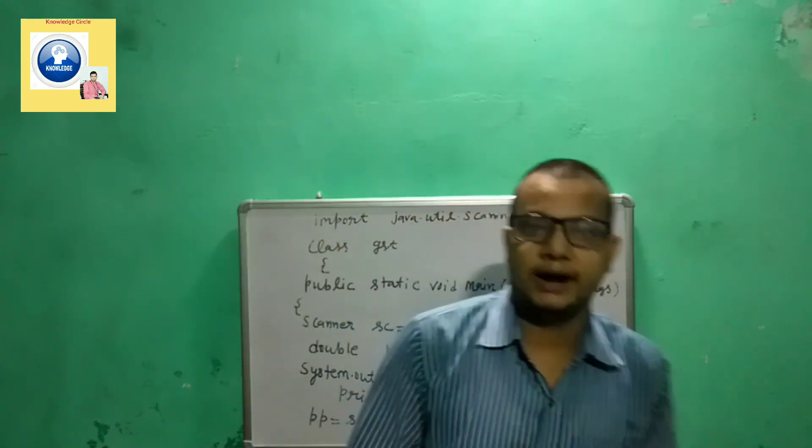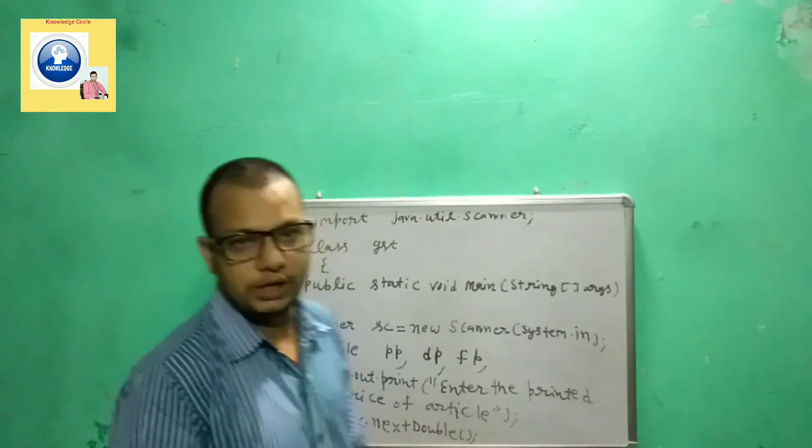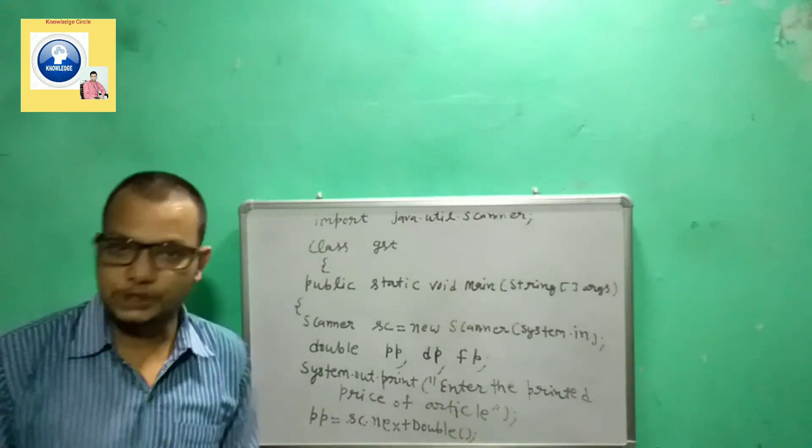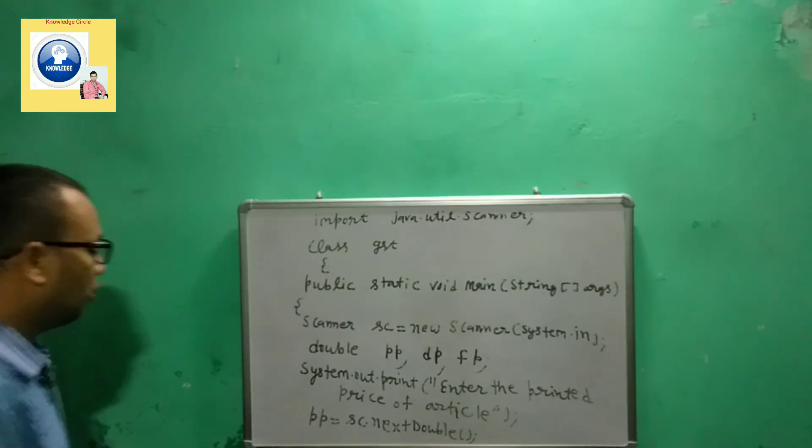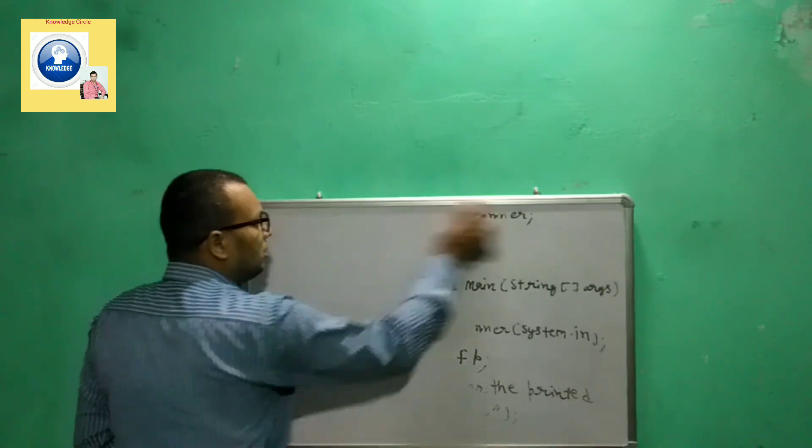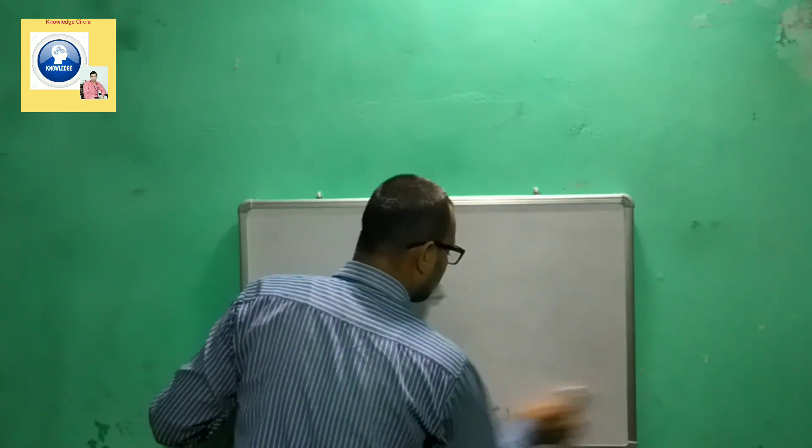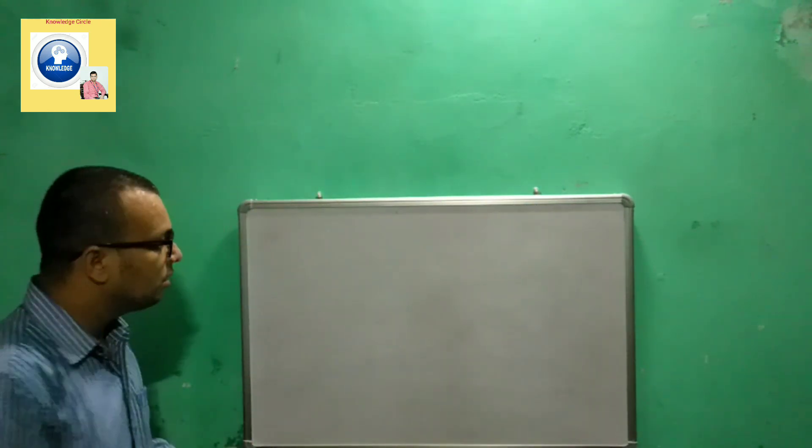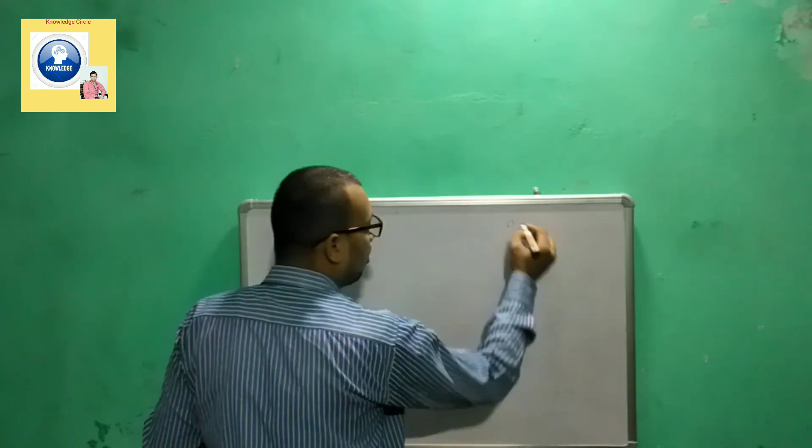We got input. It's time to calculate the discount price and then the final price. What was the percentage of discount? Discount was 20 percent and GST was 8 percent.